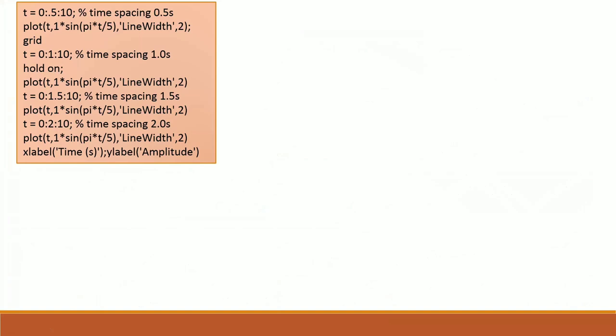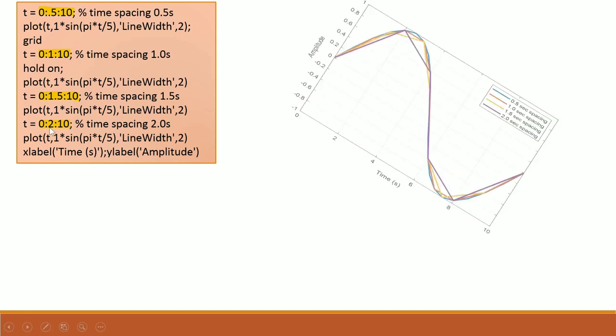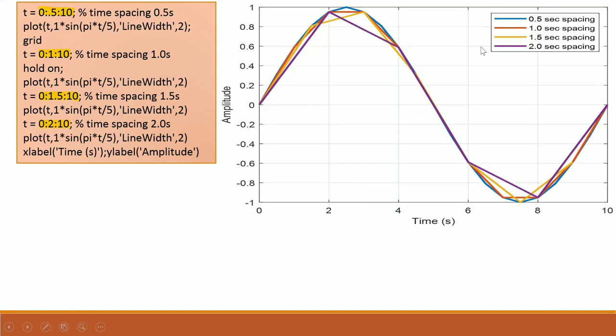Next we see from another angle. We have a low frequency signal of 0.1 hertz or a time period of 10 seconds. We select time spacings of 0.5, 1, 1.5 and 2 seconds as shown in the legends with different colors. For the 0.5 seconds spacing, the distortion is the least as shown by the green color while the distortion is maximum for time spacing of 2 seconds as shown by the magenta color.